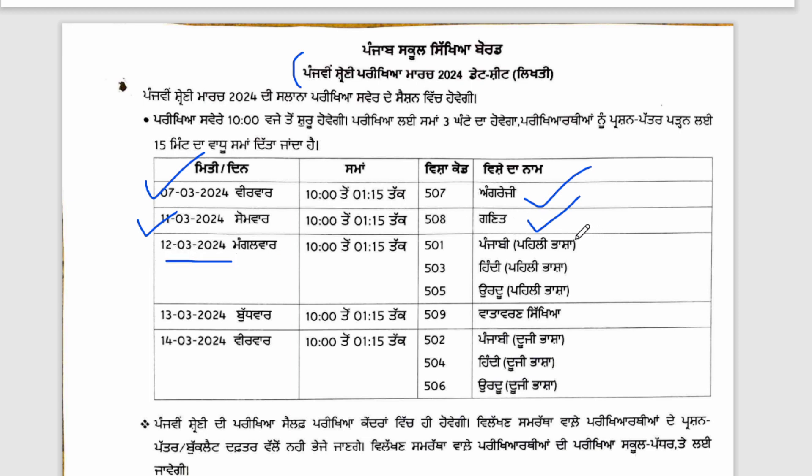The first paper will be held in the school, which will be held in the first paper. Generally, the first paper will be held in Punjab. The other paper will depend on the school, but it will be held in the same way.